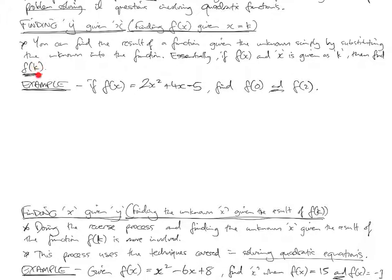Essentially, if you've got f of x and you know what x is, it's given as a certain number k, then we're finding f of k. You're plugging in the number k into the function to work out what f of x would be given that number. So example, f of x is 2x squared plus 4x take 5. Let's find what f of 0 is going to be. So k in this case will be 0, and find f of 2, so k in this case will be 2.